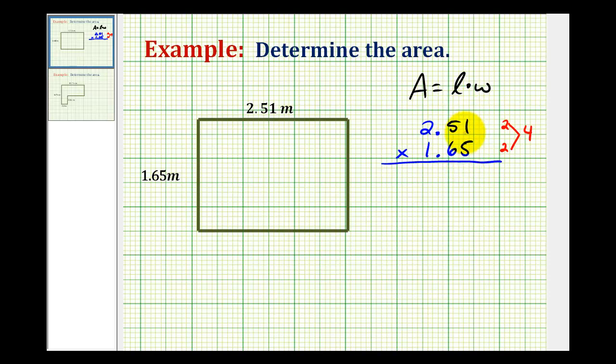We'll first multiply by 5. 5 times 1 is 5. 5 times 5 is 25, so we carry a 2. 5 times 2 is 10 plus 2, that would be 12.